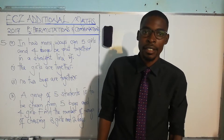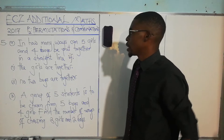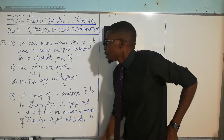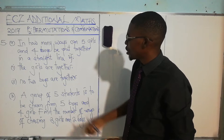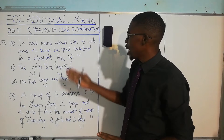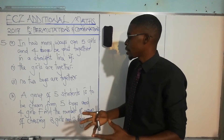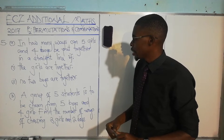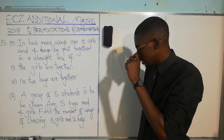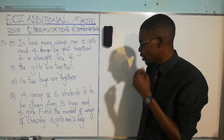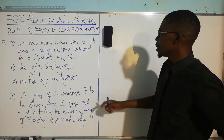Hello viewers, this is Mr. Banda, Mathematics Made Easy. In this lesson we're looking at Additional Mathematics 2017 Paper 2. We are looking at permutations and combinations from the Additional Mathematics Examination Council of Zambia. We have question 5a: in how many ways can five girls and four boys be put together in a straight line? And part B: a group of five students is to be chosen from five boys and four girls — find the number of ways of choosing three girls and two boys.